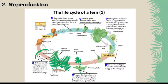Hello everyone, my name is Safa. Here I am going to explain the reproduction of a fern through the diagram of the life cycle of a fern. A fern can do two types of reproduction: sexual or generative, and asexual or vegetative.